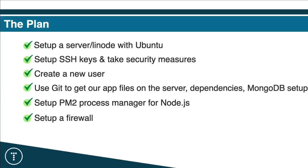Then we want to set up a firewall to block any ports except the ones we need: HTTP, HTTPS, and SSH. Finally, we'll set up and configure an Nginx server and set up a proxy so we can access our app through port 80, which is the HTTP port. I'll also show you how to add a domain through Linode, though that process will vary depending on your service.